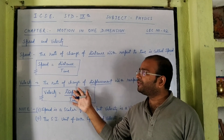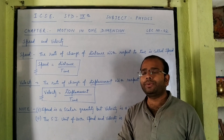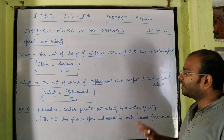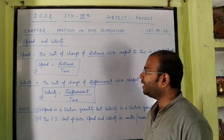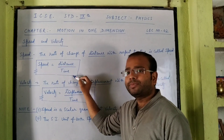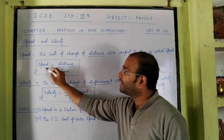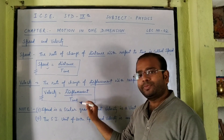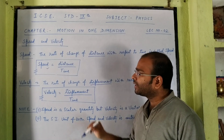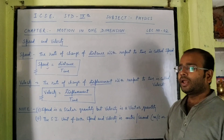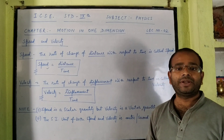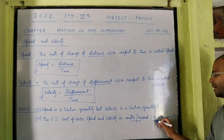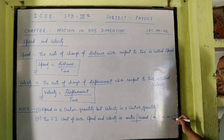After taking the definitions of speed and velocity, we can note two important points. The first point is speed is a scalar quantity but velocity is a vector quantity. Speed is a scalar quantity because we divided distance by time, and distance is a scalar quantity. Velocity is a vector quantity because displacement is a vector quantity. The SI unit of both speed and velocity is meter per second, written as m/s or meter second inverse.